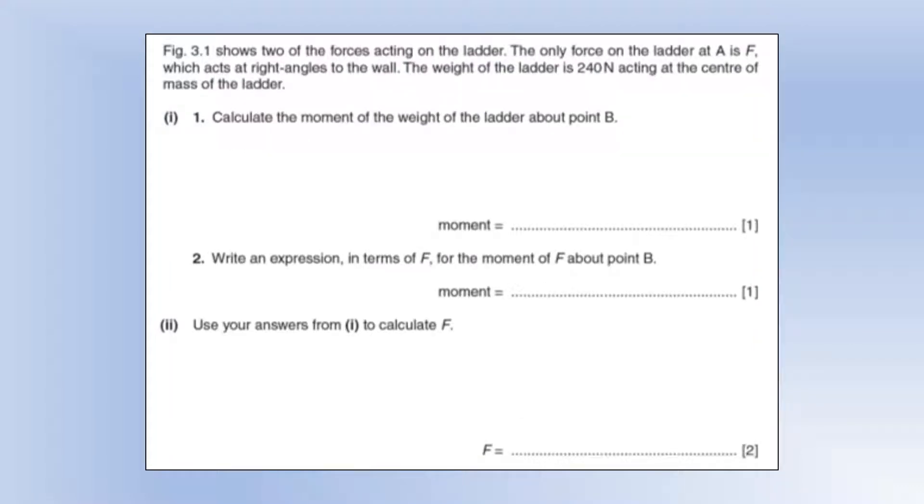The diagram shows the two forces on the ladder. So the only force at A is F, so there's no friction on the wall, and that acts normally, so at right angles.